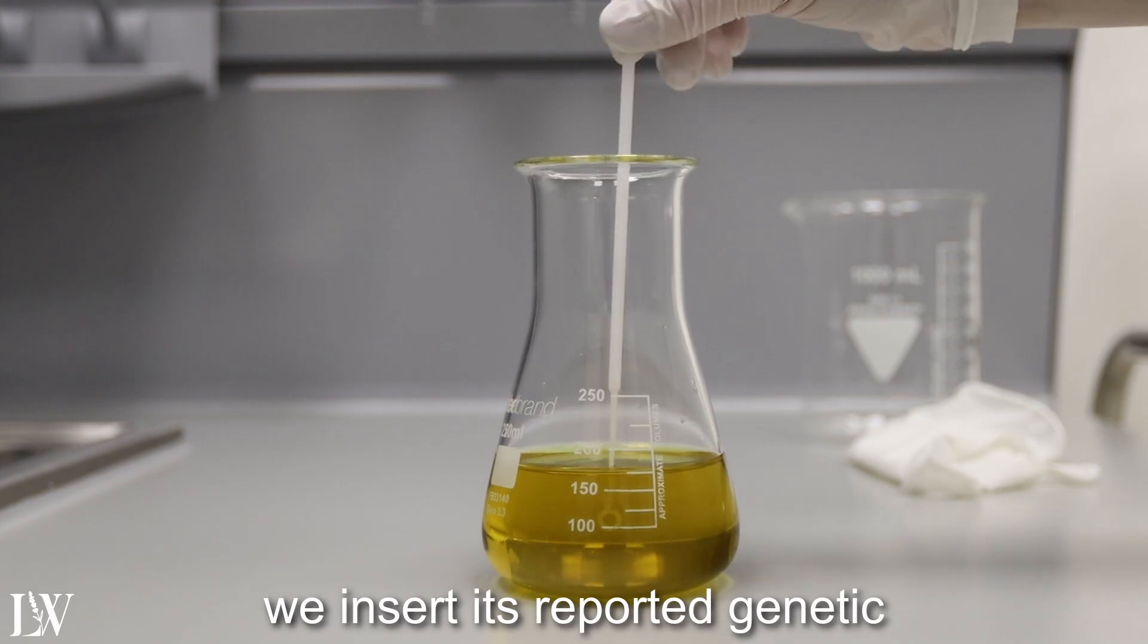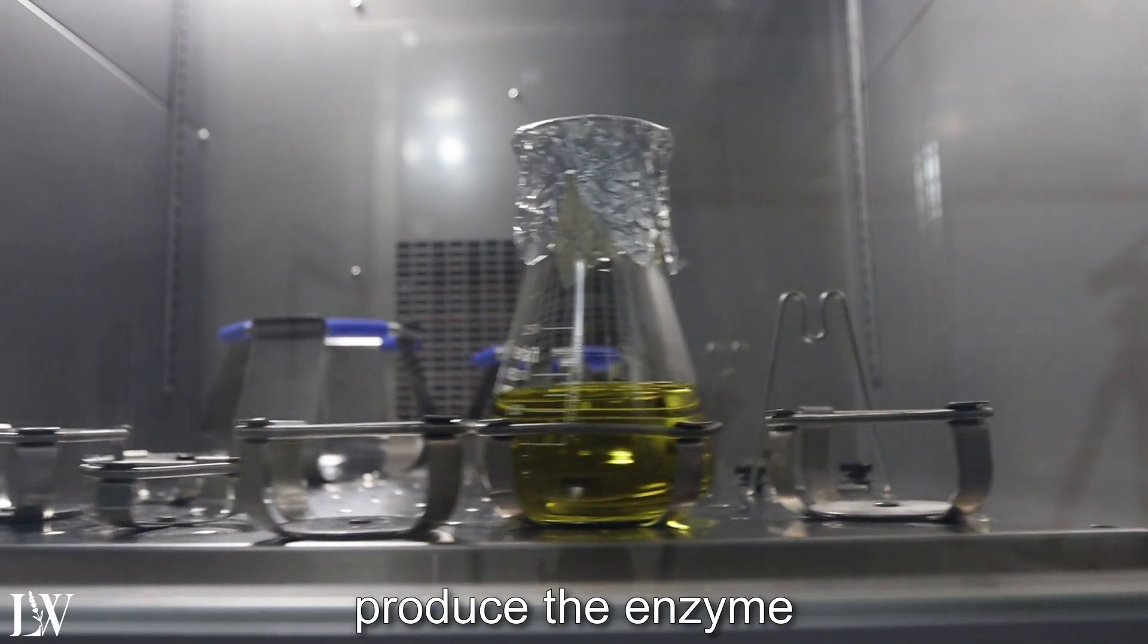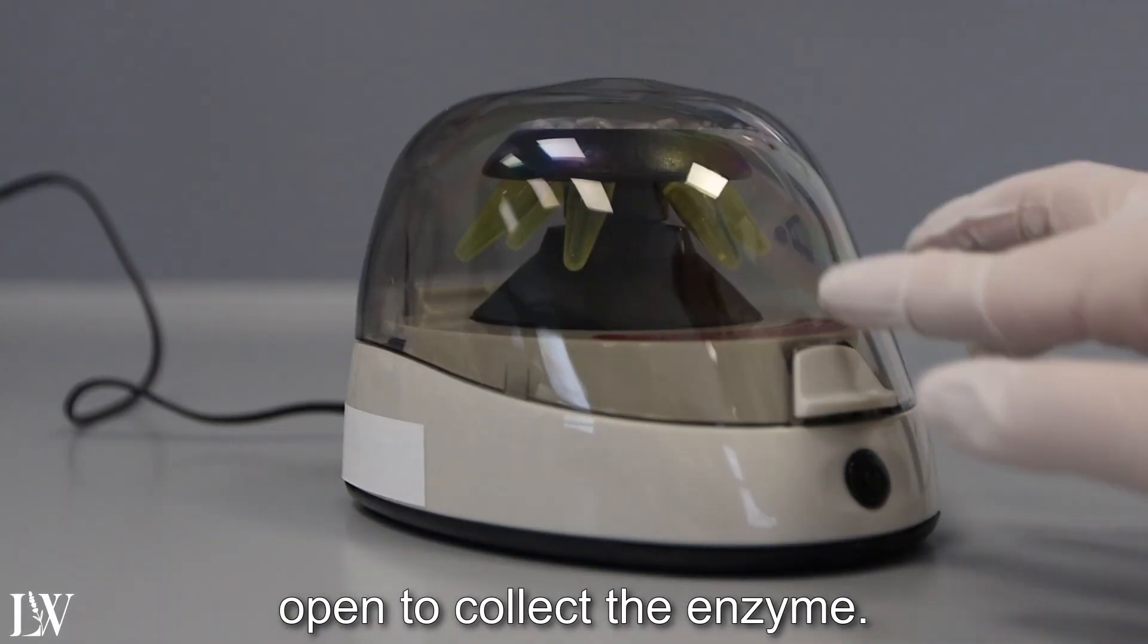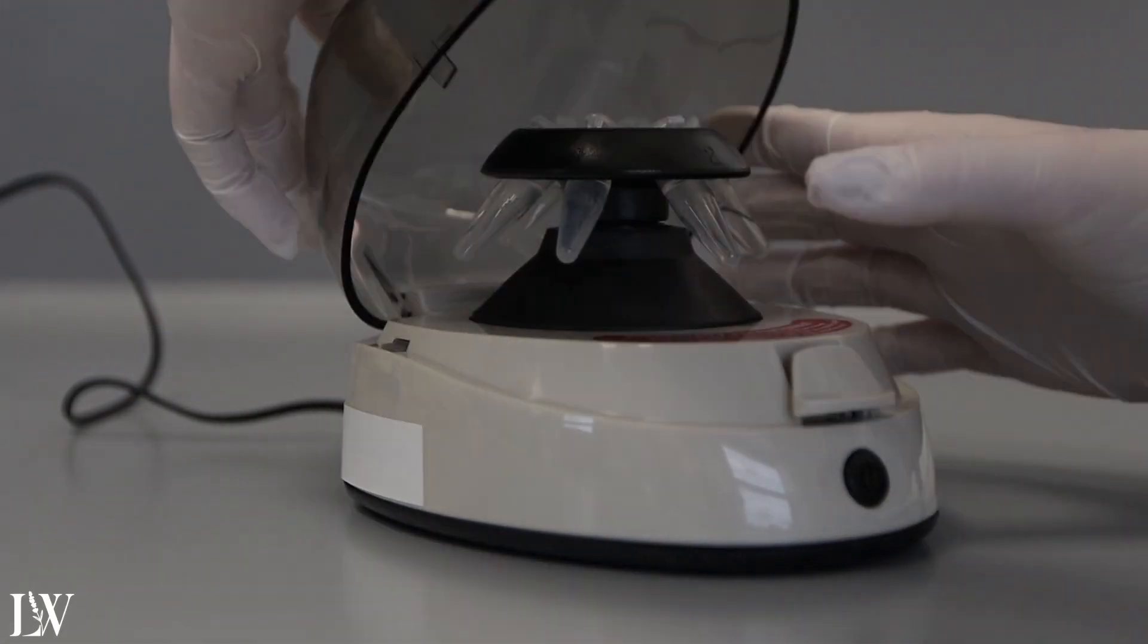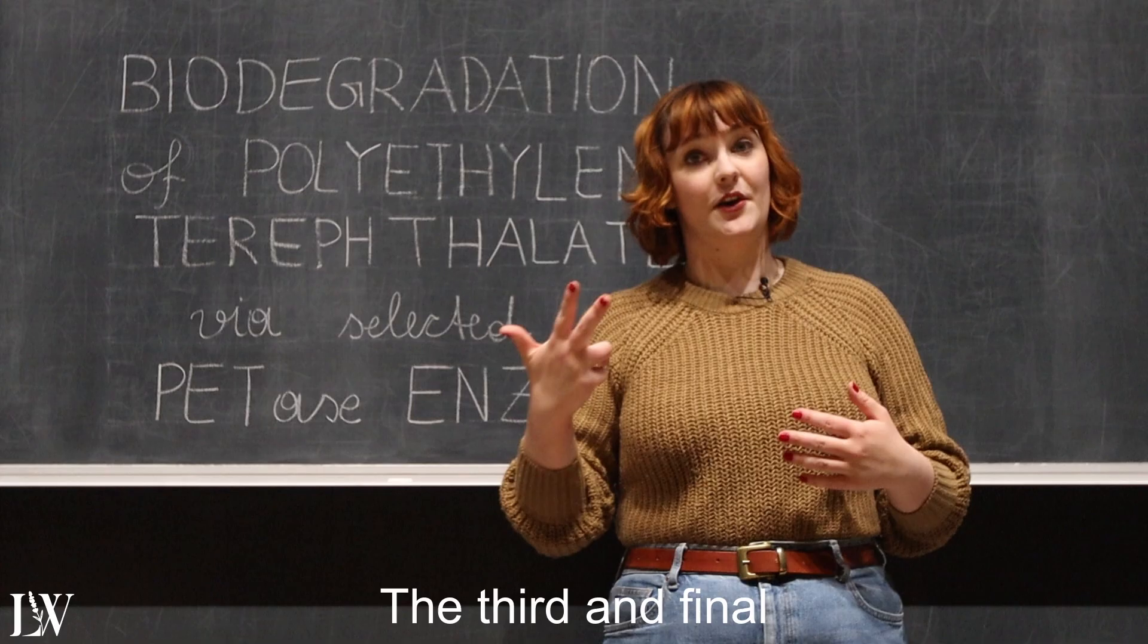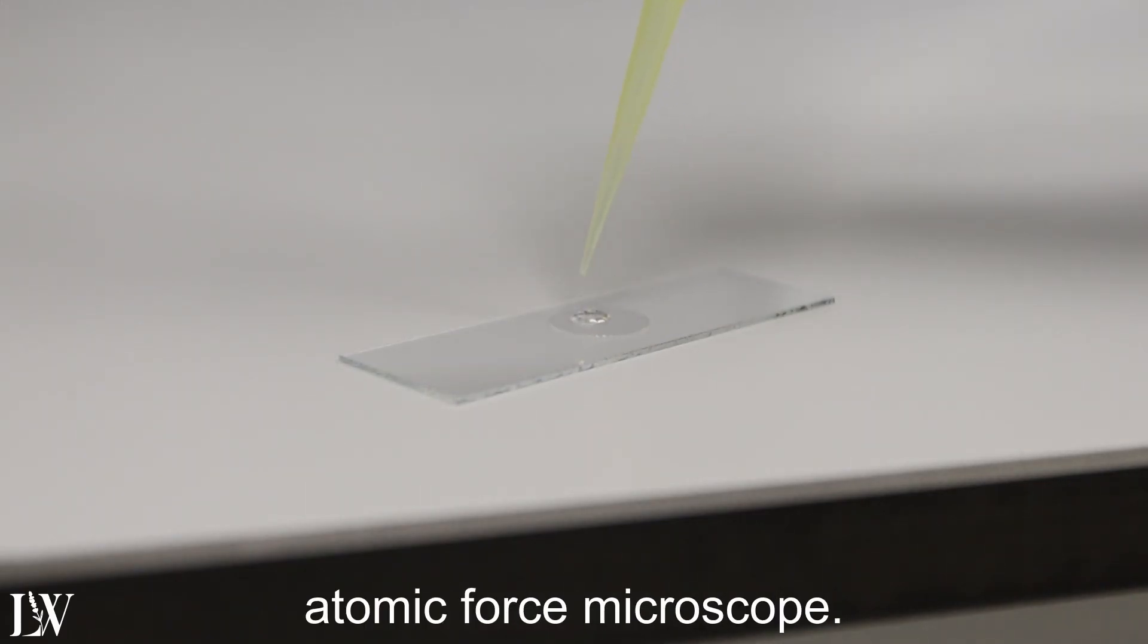To make the enzyme usable, we insert its reported genetic code into an E. coli bacteria. We let the bacterium produce the enzyme for us, and then we crack the bacterial cell open to collect the enzyme. The third and final step is simple: we let the enzyme loose on the surface and watch what happens using an atomic force microscope.